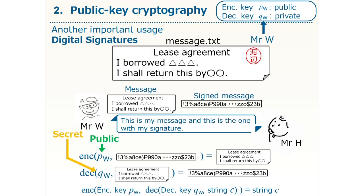Recall that this decryption key is my own secret — no one but me knows this key, so only I could make this signed document. That is why Mr. H can be sure that this is my signed document. Note also that my encryption key is public, so Mr. H can also use it for his confirmation process.